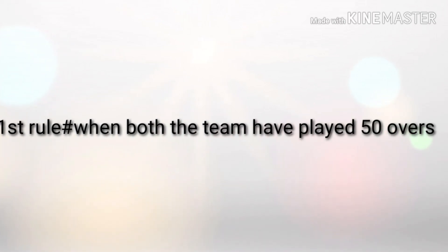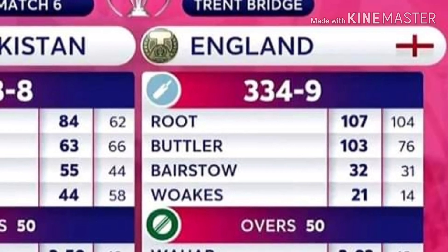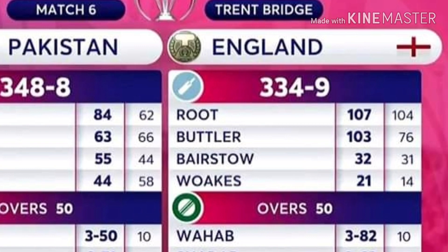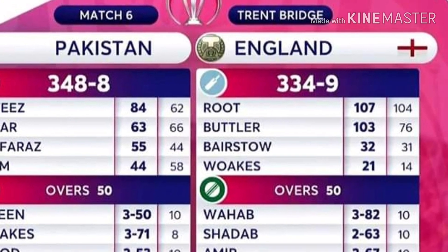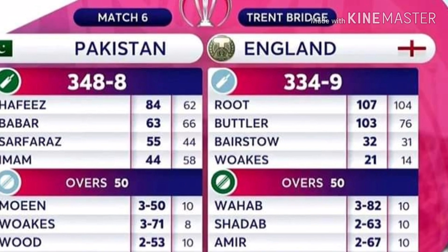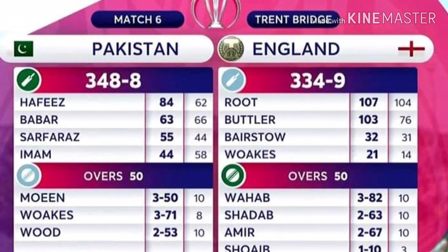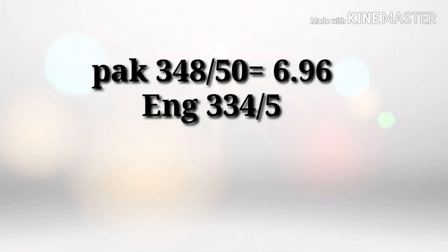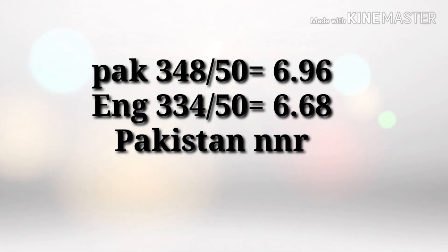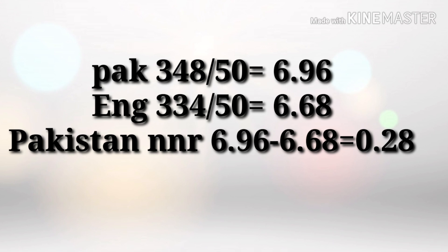The first type of match is when both teams have played 50 overs. For example, in the 2019 World Cup, Pakistan played 50 overs and made 348 runs with an average of 6.96. Then England came to bat and made 334 runs in 50 overs with an average of 6.68. So the Net Run Rate for Pakistan is 6.96 minus 6.68, which equals 0.28.